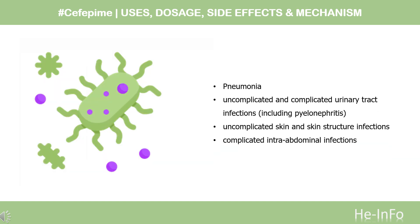What is Cefepime used for? Cefepime is indicated for the treatment of pneumonia caused by susceptible bacteria, and for empiric therapy for febrile neutropenic patients. Cefepime is also indicated for the treatment of uncomplicated and complicated urinary tract infections, including pyelonephritis, uncomplicated skin and skin structure infections, and complicated intra-abdominal infections used in combination with metronidazole, in adults caused by susceptible bacteria.